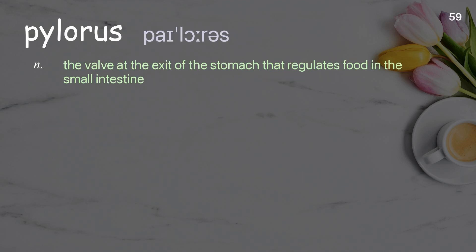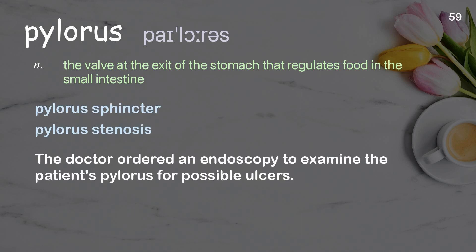Pylorus. The valve at the exit of the stomach that regulates food in the small intestine. Examples: pylorus sphincter, pylorus stenosis. The doctor ordered an endoscopy to examine the patient's pylorus for possible ulcers.